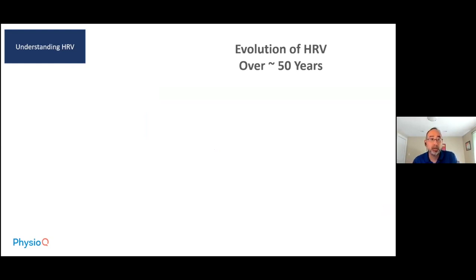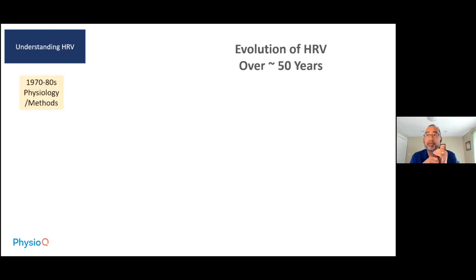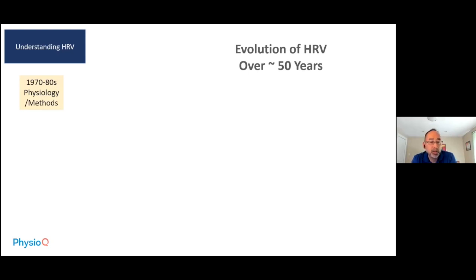The first stage — understanding heart rate variability — happened predominantly in the 1970s and 1980s, with a focus on physiology and the development of methods. In my view, the 1970s and 1980s were the golden age of physiology, occurring about 20 years after Hodgkin and Huxley's work on signal transduction along squid axons.